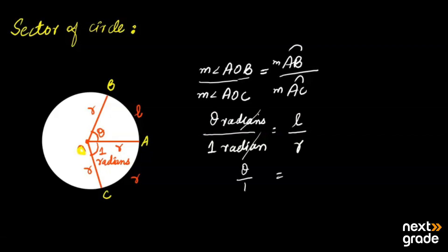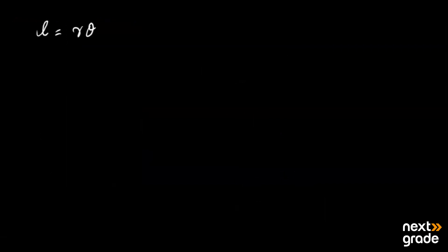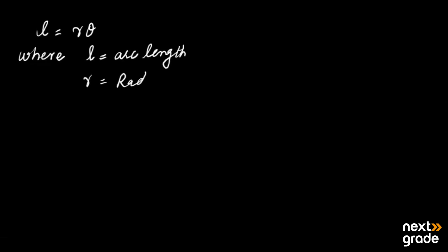The radian units cancel out, giving us: theta over 1 equals L over R. Equating, we get L divided by R equals L divided by R, where R is the radius of the circle, theta is the angle in the sector, and L is the arc length in the sector. So we define the formula: L equals R times theta.